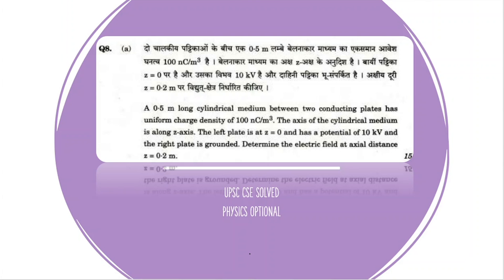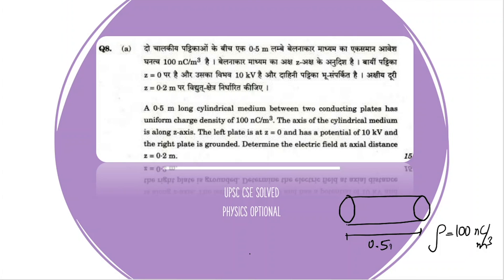Hello everyone. In today's video we will solve one of the previous year questions. We are given a 0.5 meter long cylindrical medium between two conducting plates, which has a uniform charge density. The axis of the cylindrical medium is along the Z axis, and the uniform charge density ρ is equal to 100 nanocoulombs per meter cube.